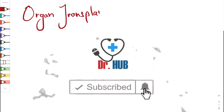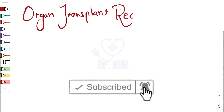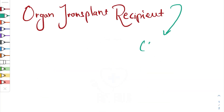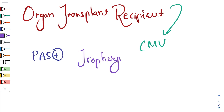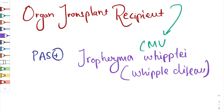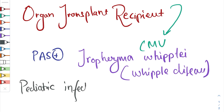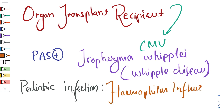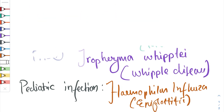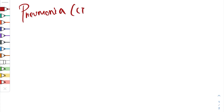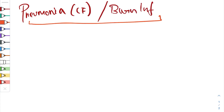Continuing the hints in microorganisms: in organ transplant recipients, CMV is seen in CMV-positive cases. In viral disease and pediatric infection, Haemophilus influenzae causes epiglottitis and pneumonia. In burns infection, the organism is Pseudomonas aeruginosa.